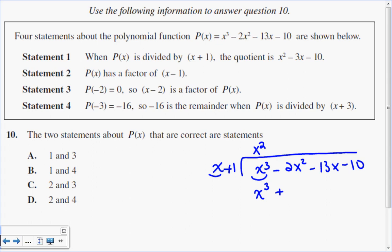x squared times 1 is x squared. Subtract. So x cubed take away x cubed is gone. Negative 2x squared take away x squared is negative 3x squared, and I can bring down my next term, negative 13x.